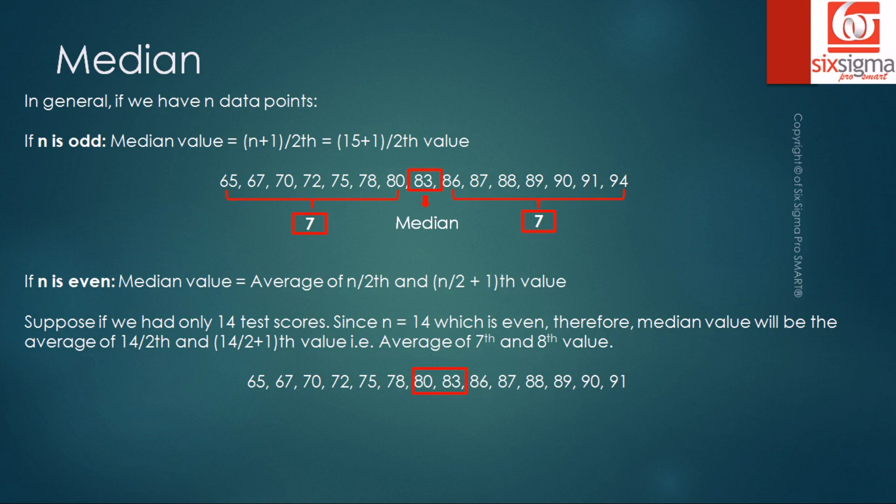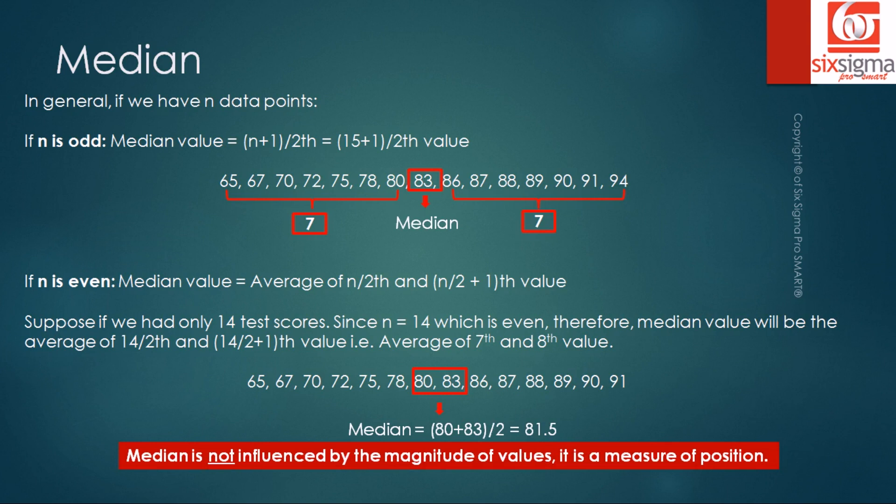Here are the two values. The median now that you have 14 data points, which is an even number, is 81.5. The important thing to remember about a median is that it is not influenced by the magnitude of values. It is a measure of position where your data is placed. How your data is placed is more important when you're talking about median. It does not get affected by the values.